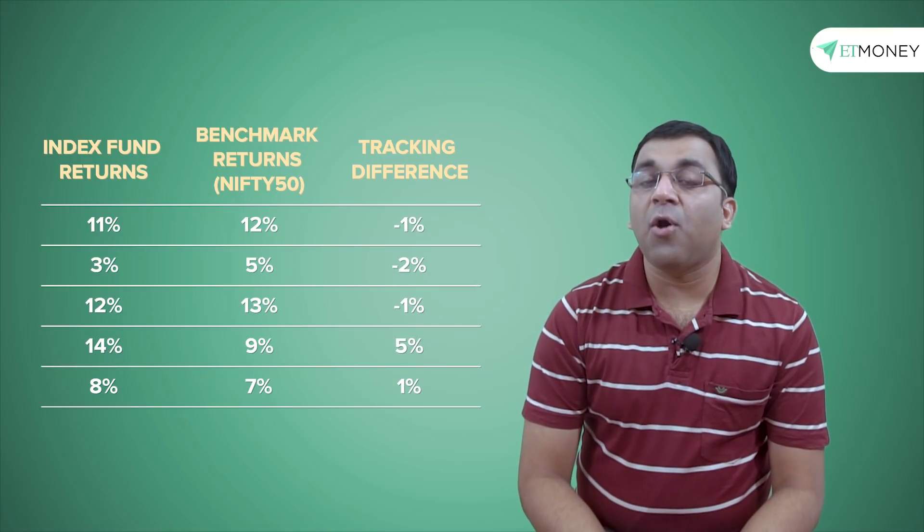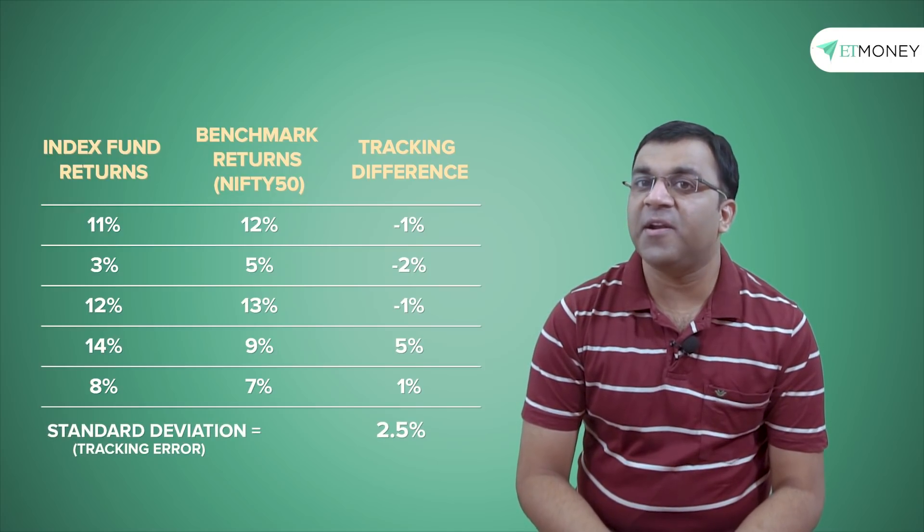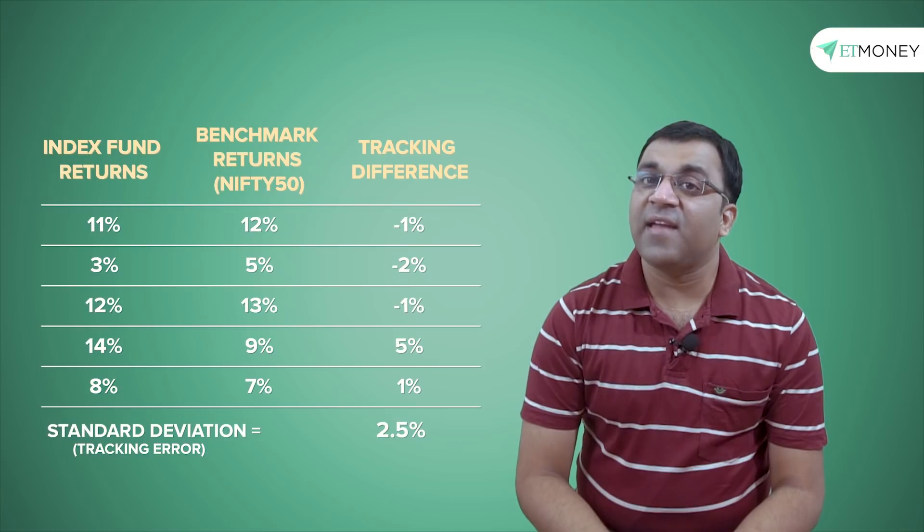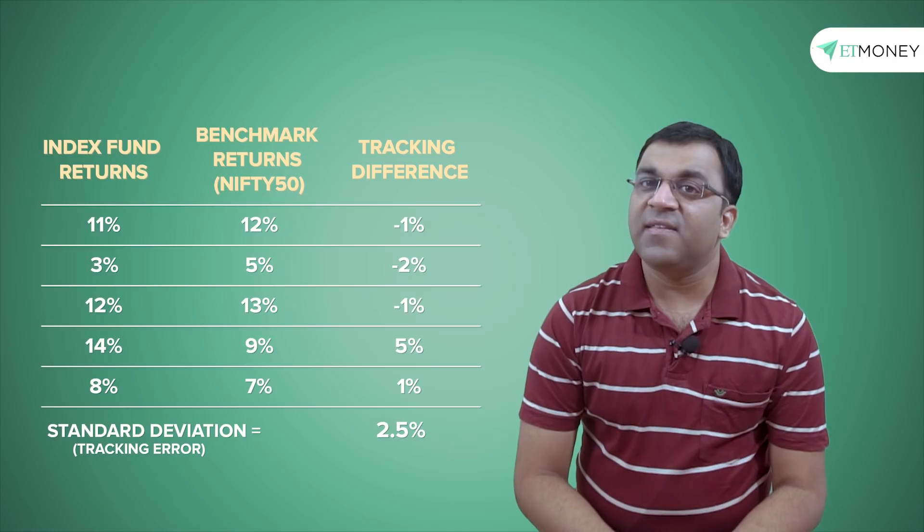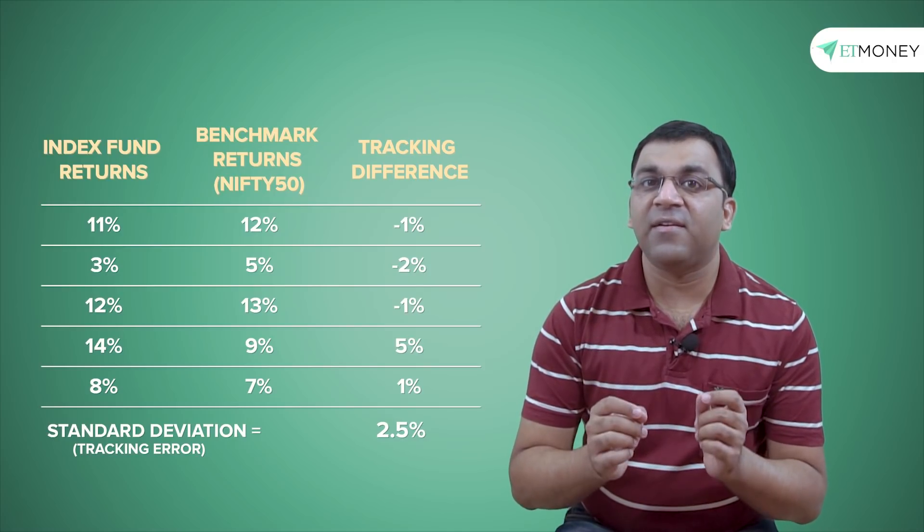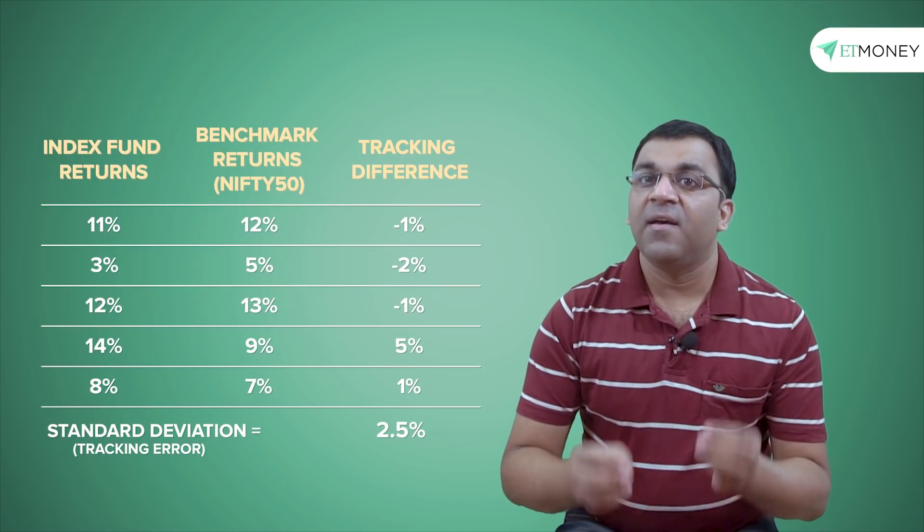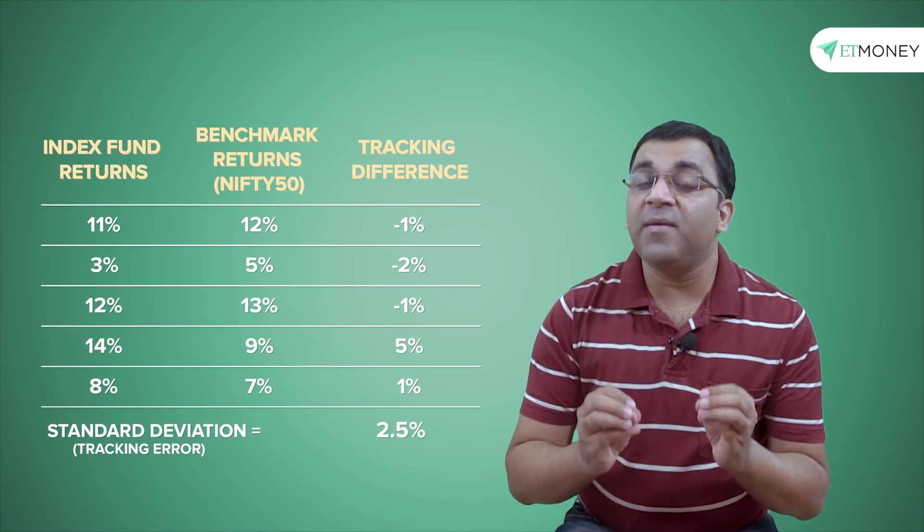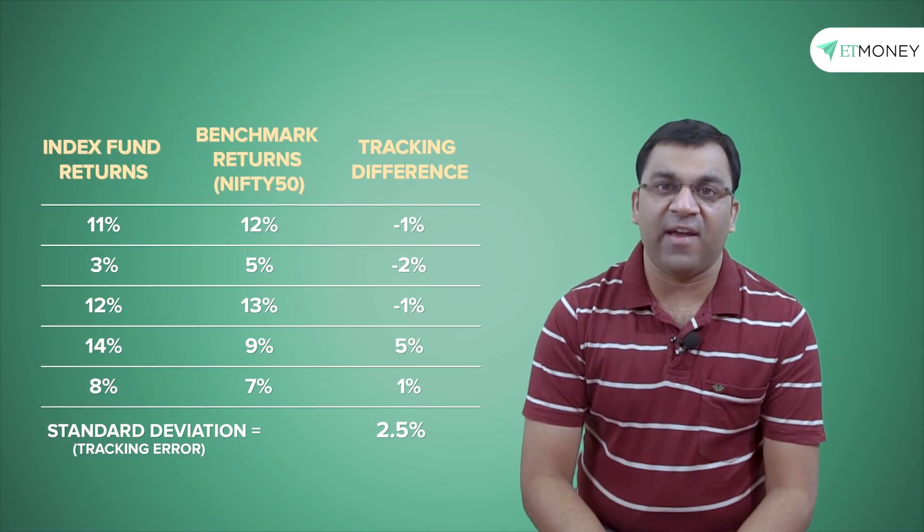The next step is to compute the standard deviation, which can be done quite easily with any spreadsheet application, and the standard deviation computes to 2.5% for this data set. The standard deviation of 2.5% is the tracking error of our index fund, which clarifies what we said earlier. A tracking error is pretty much a volatility measure and it is something that all index funds diligently track.